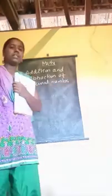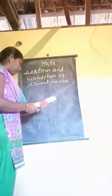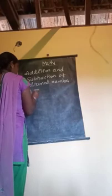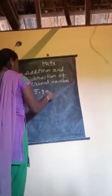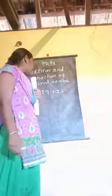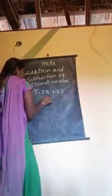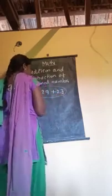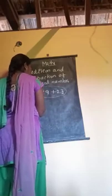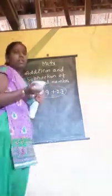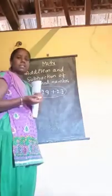How to solve the addition and subtraction of decimal numbers? For example, 5.29 plus 2.3. How to do 5.29 plus 2.3? This is what type of decimal number? Unlike decimal number — after the point, one has one digit group and the other has two digits. We have to convert unlike decimals to like decimals.